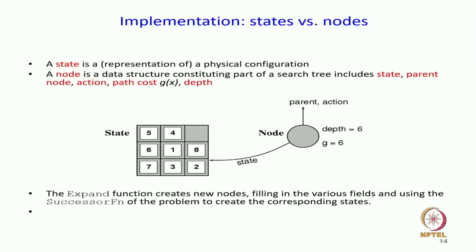When we implement, note that a world state and a search node are two different things. A state is the representation of the physical configuration. A node, however, is a data structure that has the state but also has parent information, what actions are applicable, what is the cost up to this point, what depth we are at in the search tree, etc. When you start implementing, a search node will have many more things to keep track of.